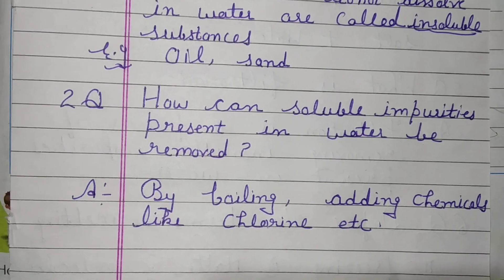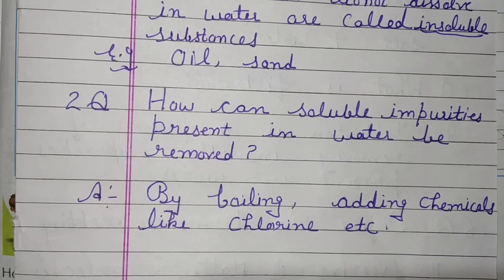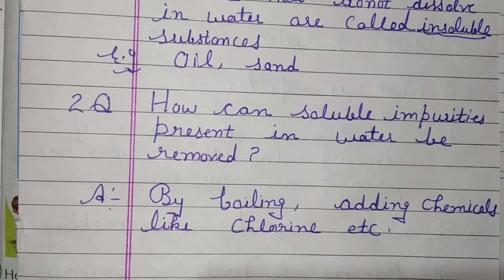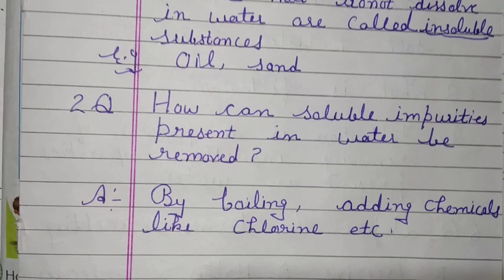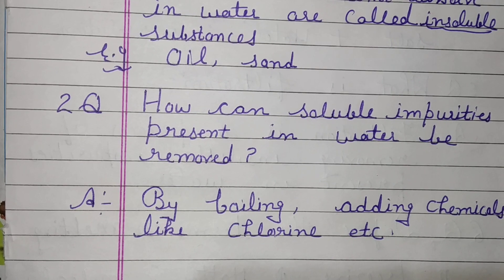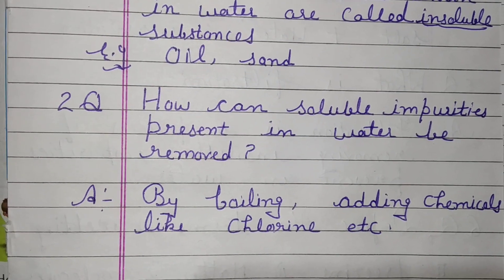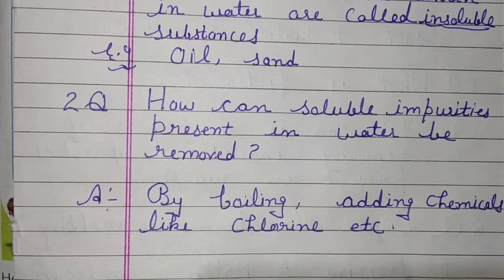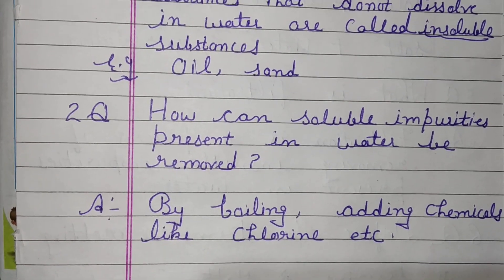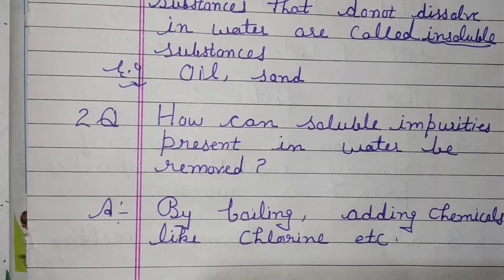Second question: How can soluble impurities present in water be removed? Answer: By boiling, or by adding chemicals like chlorine, etc.